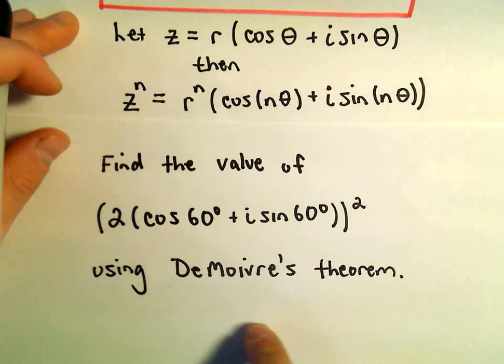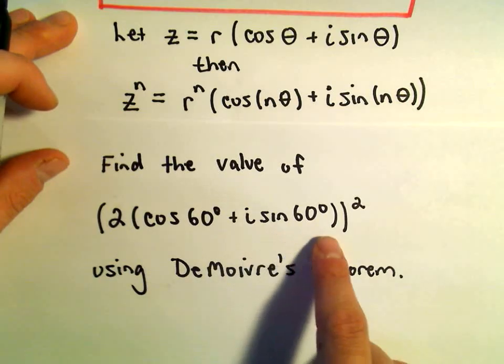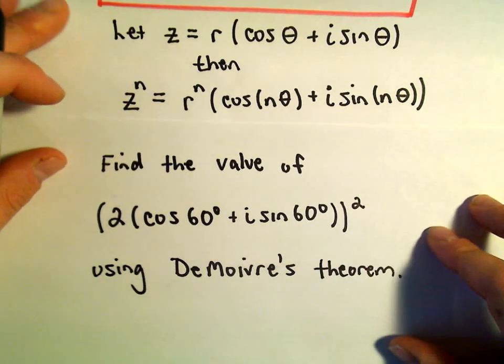So here we're going to find the value of 2 times cosine of 60 degrees plus i sine of 60 degrees, all of that to the second power.